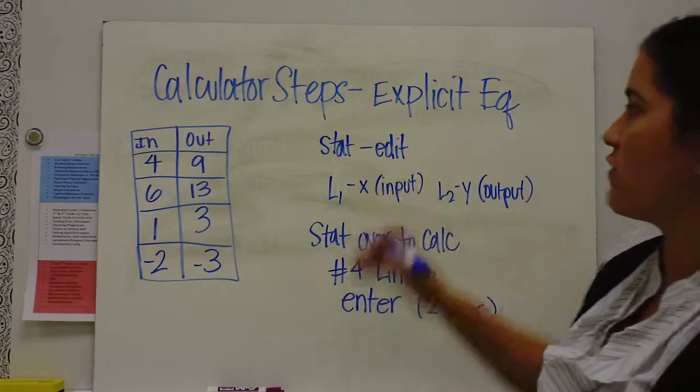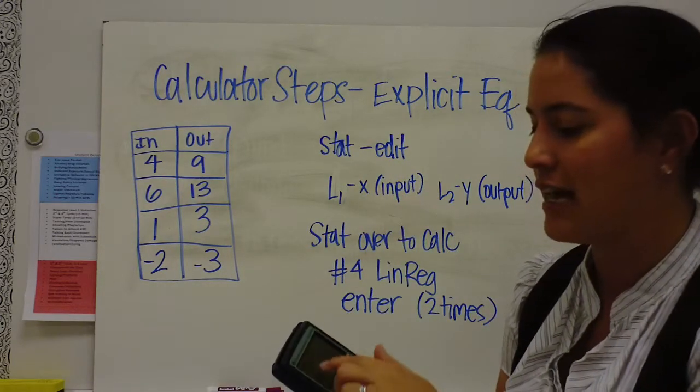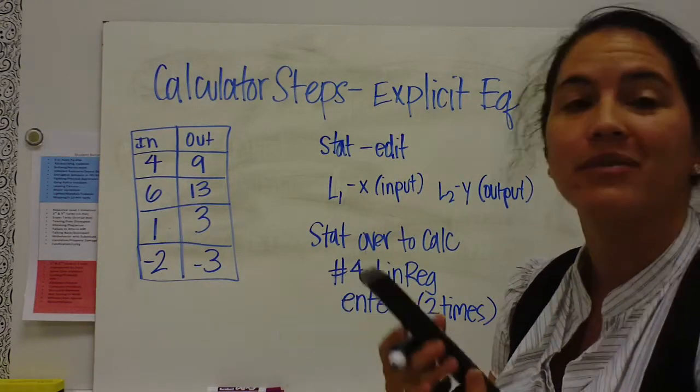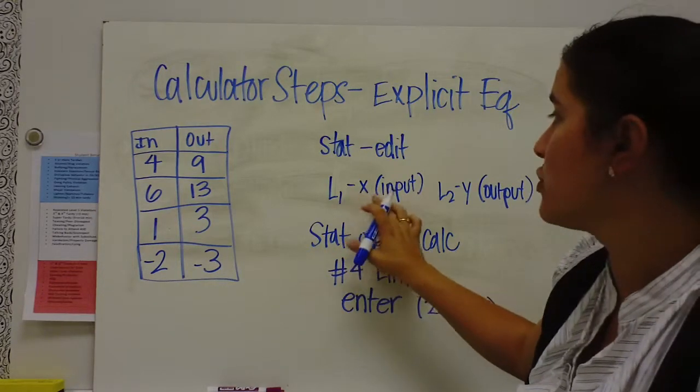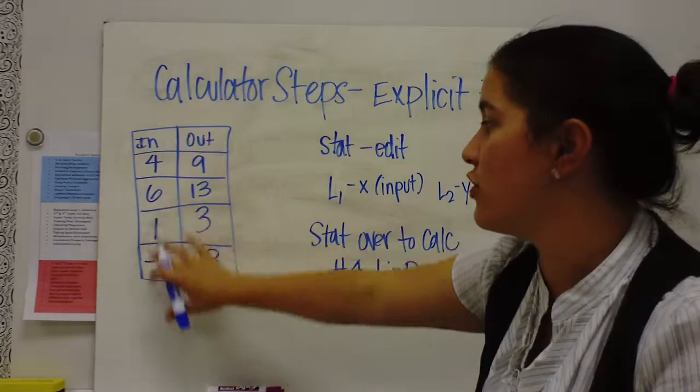So the first thing you're going to do is you're going to go to stat edit. When you press stat edit, you're going to bring up list 1 and list 2. You're going to put your x values into list 1, your input.